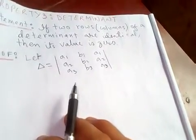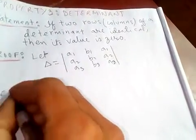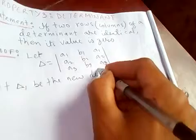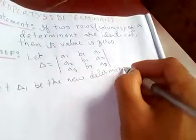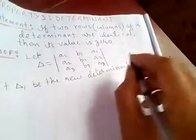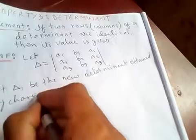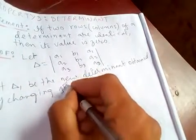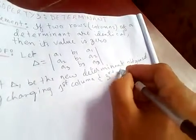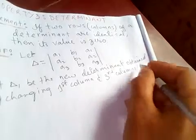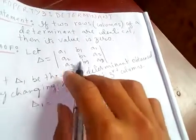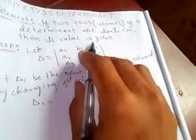Now let me take delta one to be the new determinant obtained by changing the first column and third column. Let's say delta one is the new determinant obtained from this one by interchanging the first column and third column.